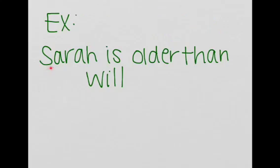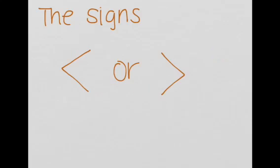So here's the example. Sarah is older than Will. So how would you represent that Sarah is older than Will? Well, let's see. There are two signs for inequalities, either this sign or this sign. Let's look at what each sign means.